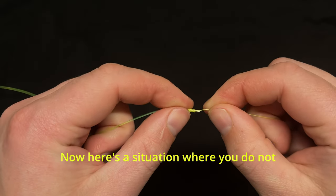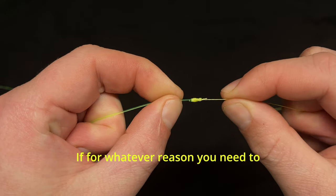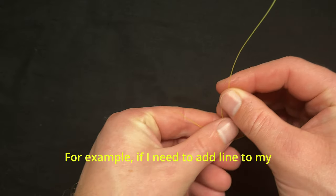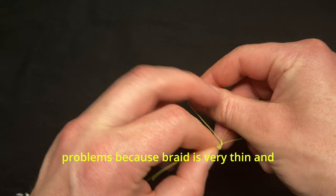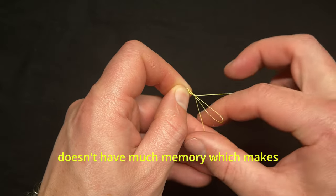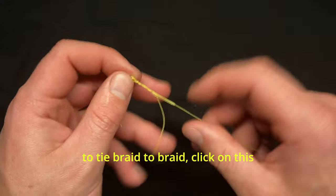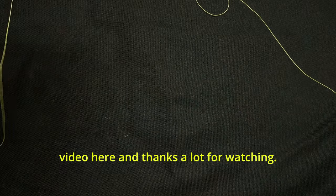Now here's a situation where you do not want to use this knot. If for whatever reason you need to connect braid to braid, this knot should be avoided. For example, if I need to add line to my spool, this knot might cause some problems because braid is very thin and doesn't have much memory, which makes wrapping around it quite difficult. To remedy this and learn the simplest way to tie braid to braid, click on this video here. Thanks a lot for watching.